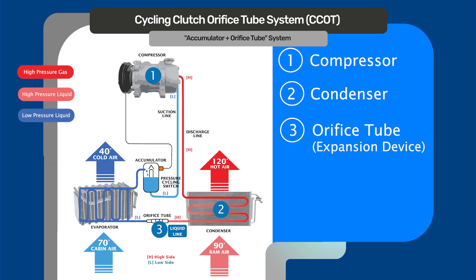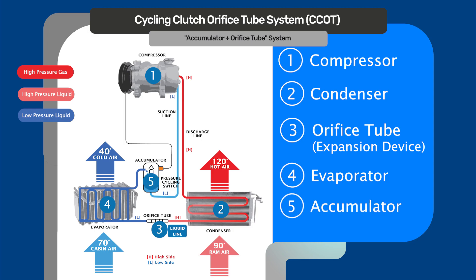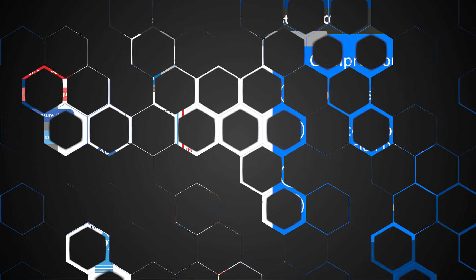This can be called a flooded evaporator system because your whole evaporator is actually flooded with cool refrigerant. When the refrigerant leaves the evaporator on this system, it goes into the accumulator. Any extra liquid refrigerant in the system accumulates here and it gives a little bit more time to evaporate off before it gets back to the compressor, because you just want gas getting back to the compressor.